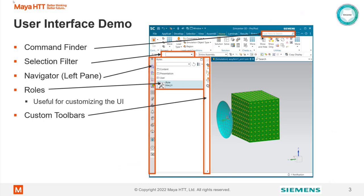I'll start with the UI. In the top right, we have the command finder. This is where we can search for commands like extrude, cut, or even temperature loads. It's very useful for new users because it can help you find where things are in the UI and find commands. Then there's the selection filter — if you have overlapping entities like elements and faces, you can use the selection filter to limit your selections.